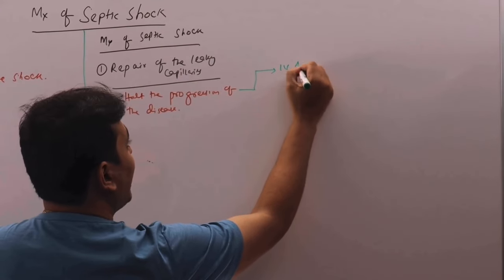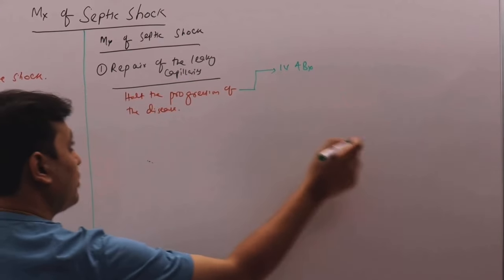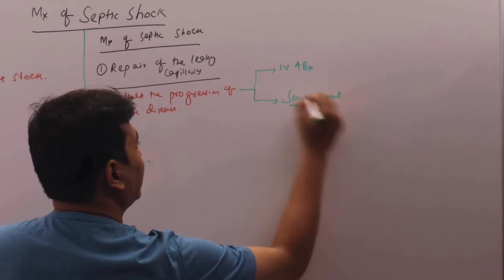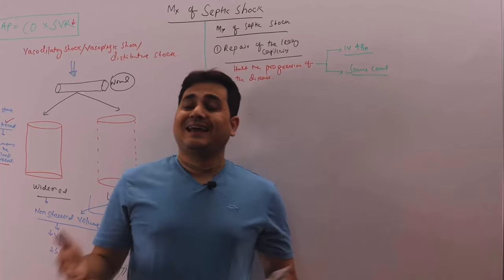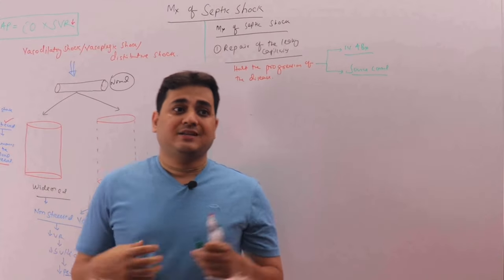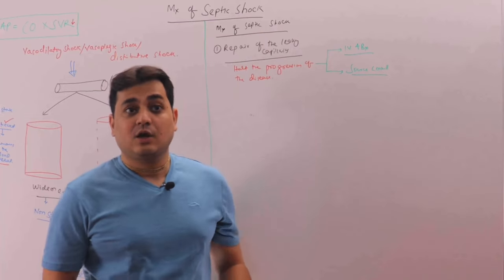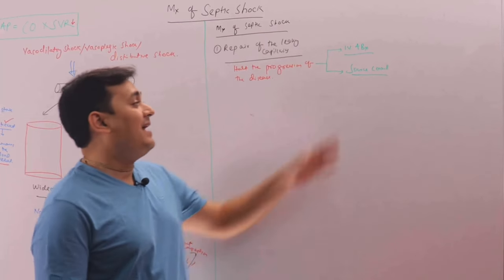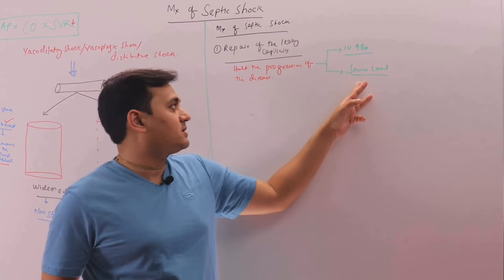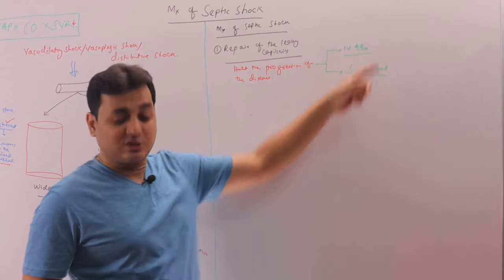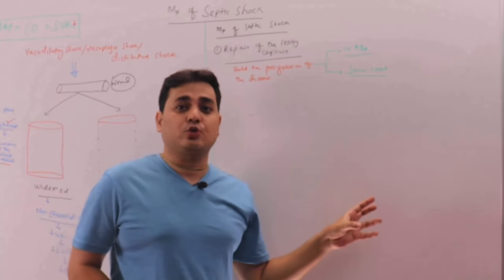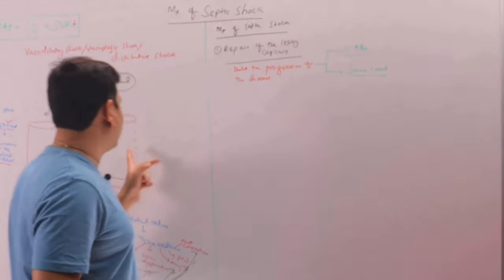One is IV antibiotics, the must for these patients. And second is source control. If you find a source, there is a central line inside, there is a chemo port or there is cholecystitis, there is pyelonephritis, all these things you have to look for in the patient. And you find the source, controlling the source is paramount of importance in our case. Obviously start antibiotic as soon as possible. So this will take care of the leaky capillaries because as soon as you treat the source, treat the infection, the pathology will subside.